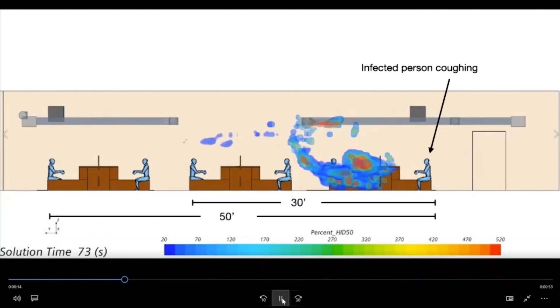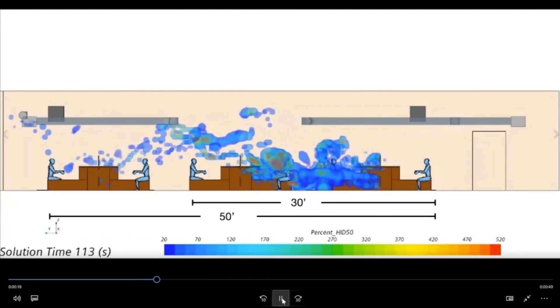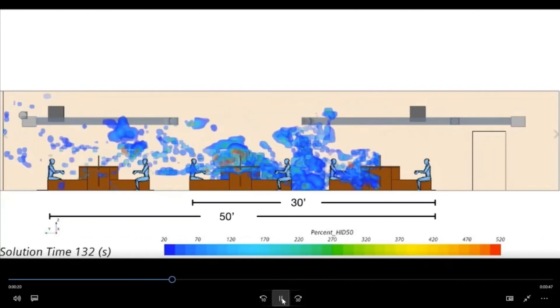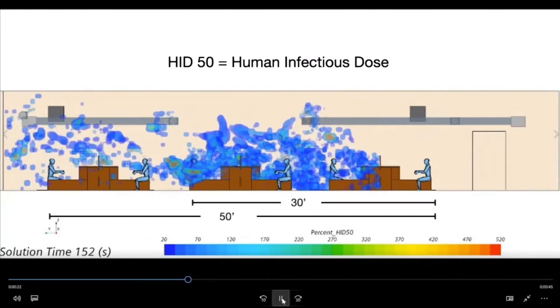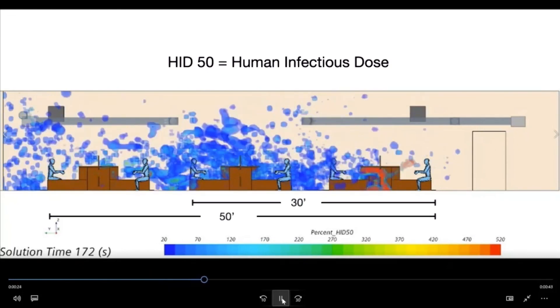You should note that anywhere from light blue to red represents the HID 50, or human infectious dose for COVID-19, and red is five times the human infectious dose.